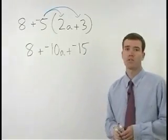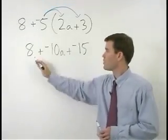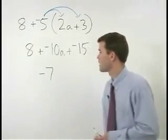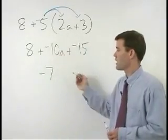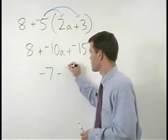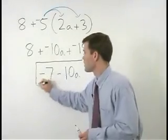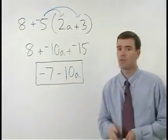Now just combine your like terms. 8 plus negative 15 is negative 7, and plus a negative 10a can be written minus 10a. So your answer is just negative 7 minus 10a.